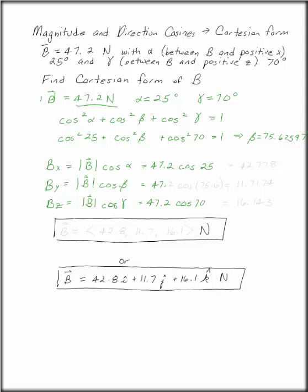Beta was 75.6 degrees. You can multiply these out. bx is 42.777, by is 11.7174, and bz is 16.143.